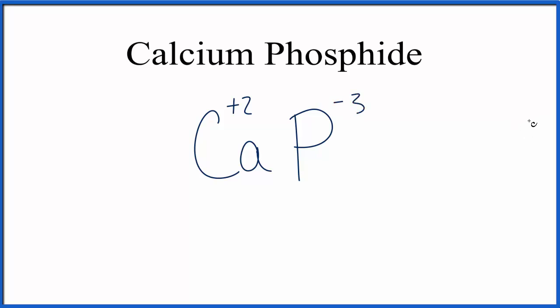This is a good one to start with the crisscross method, and then check and make sure it works. So I take the three, I move it here, and the two here. Remember the calcium was a plus two, and phosphorus, that was the minus three.